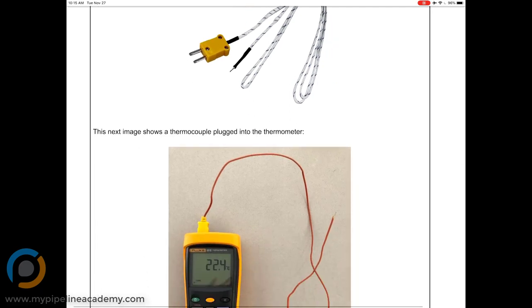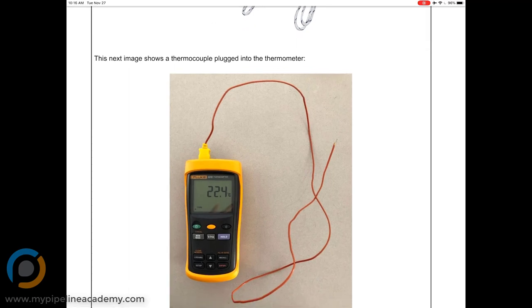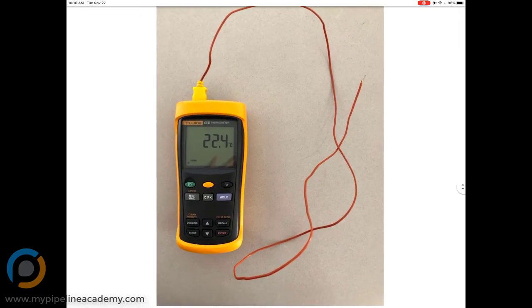It's really easy to use. You just plug it into your digital meter here, like this fluke meter that's shown here, and then you approximate the exposed wire at the tip to whatever you're trying to measure the temperature of.